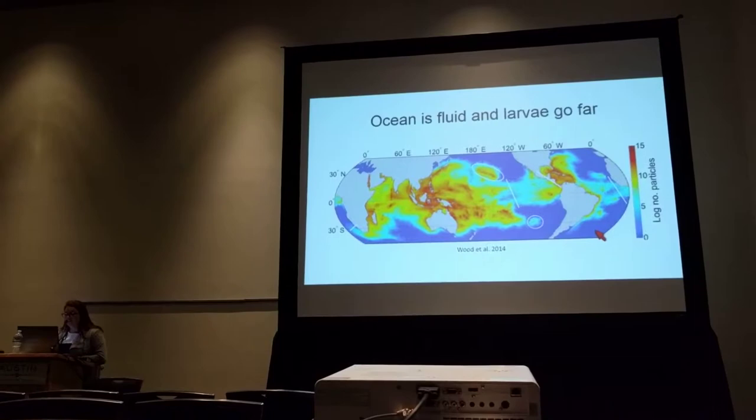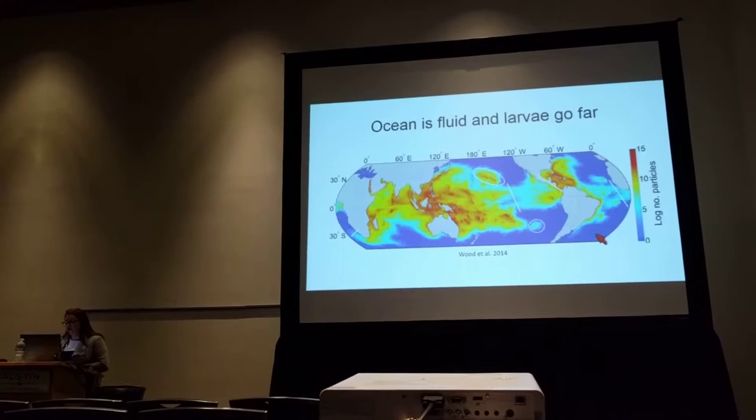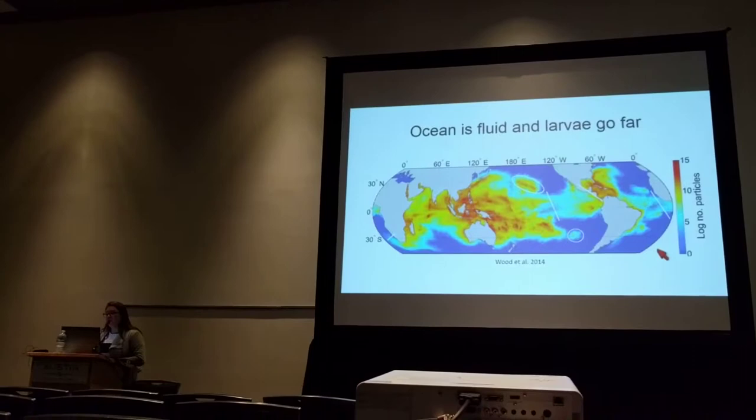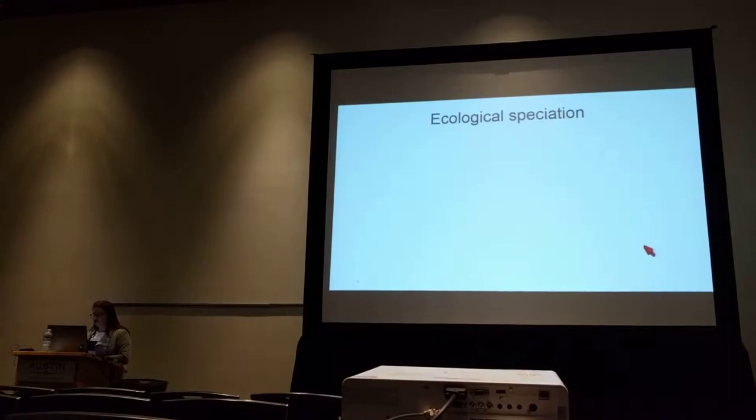Here I'm showing you a simulation of coral larvae on a global scale, and I've highlighted areas in white that are strong barriers to dispersal, and there's only six here. So speciation has to proceed, oftentimes, with varying levels of gene flow.